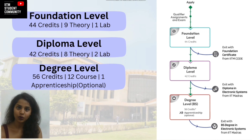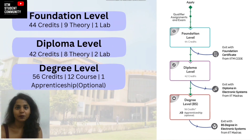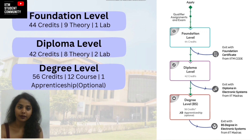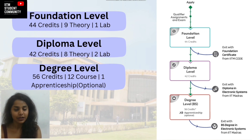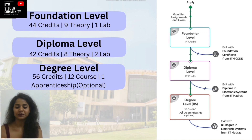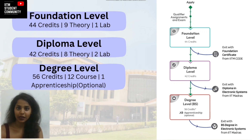After you qualify and get into the course, there will be a foundation level with 44 credits — nine theories and one lab. For the lab, you have to visit the campus. Then there's a diploma level with 42 credits, eight theories and two labs, followed by the degree level with 56 credits, 12 courses and one apprenticeship. The apprenticeship is completely optional — if you want to do it, you can; if not, it's up to you.